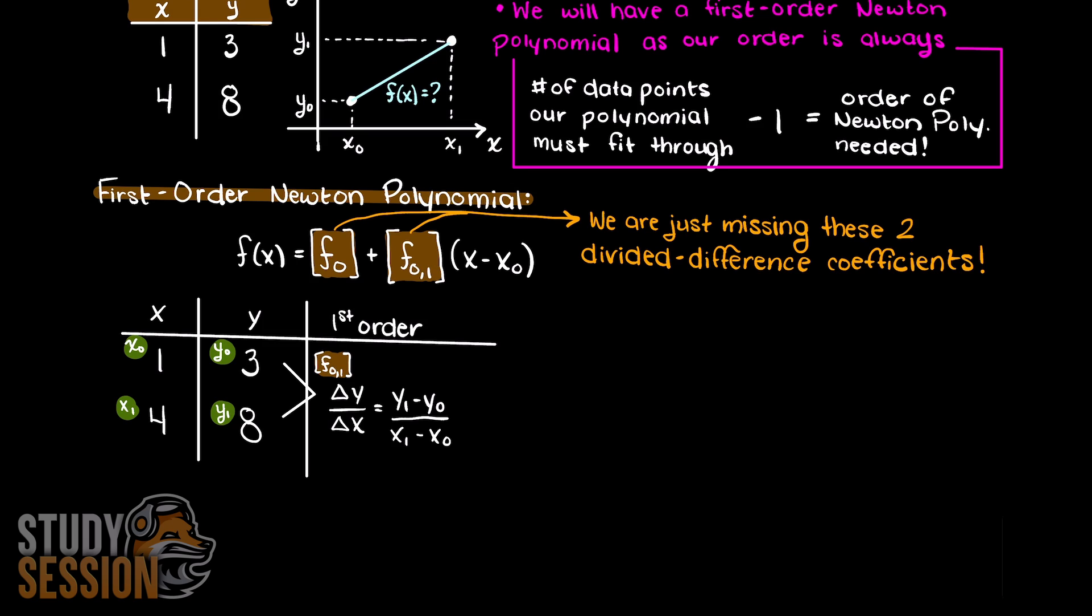So, to find our first order divided difference, we have y1 minus y0 over x1 minus x0, which works out to be 5 over 3.